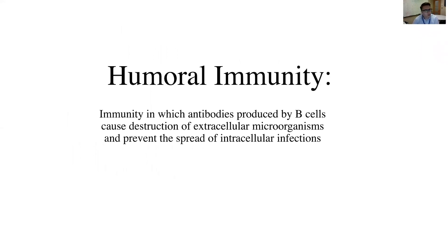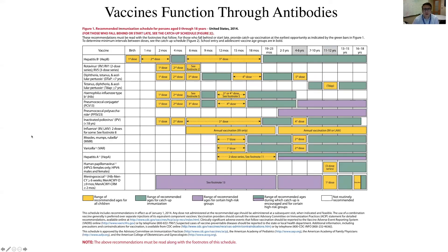Humoral immunity is essentially immunity in which antibodies produced by B cells cause destruction of extracellular microorganisms and also prevent the spread of intracellular infections. Humoral immunity is elicited by antibodies, which is very different from cellular immunity. Almost every single vaccine protects you because it elicits some sort of antibody response that will then protect you from a pathogen — either a bacteria or virus — including the seasonal flu vaccine.